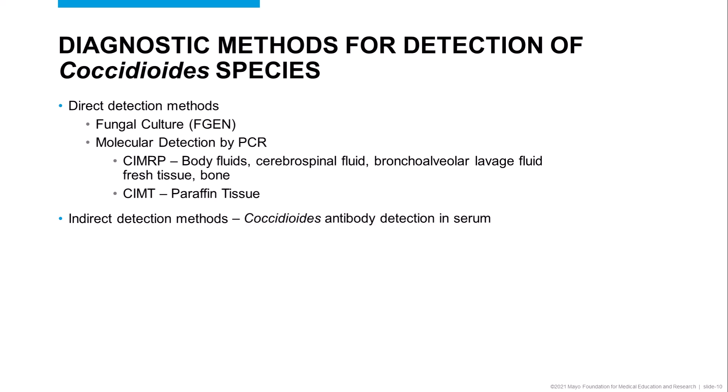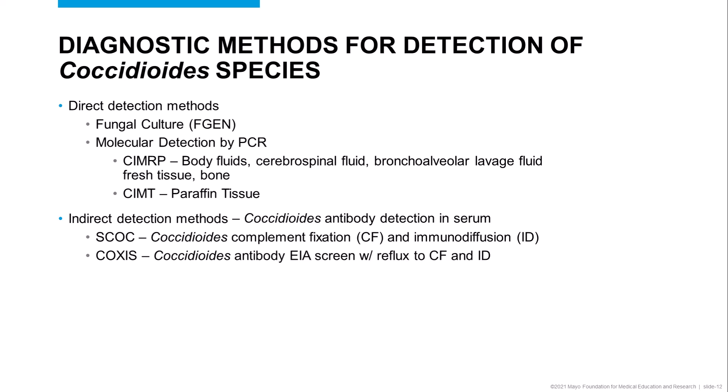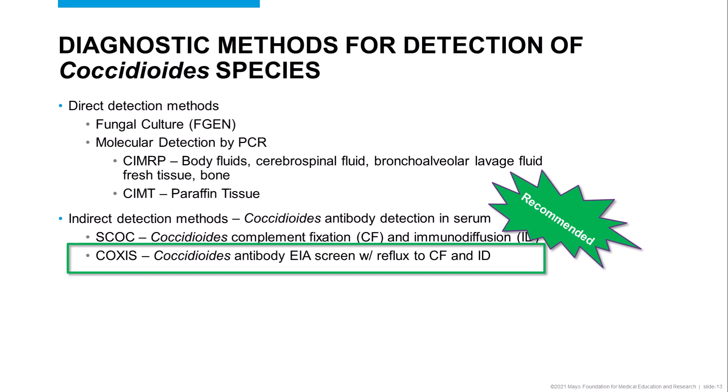Also, with both of these methods, they often require invasive specimen collection procedures, which may be contraindicated in some patients. As a result, indirect detection methods — which primarily includes detection of antibodies against coccidioides — is also frequently ordered in suspected cases or for pre-immunosuppression screening, particularly in regions where coccidioides is prevalent. We offer a number of serologic tests for coccidioides, including both the classic reference methods of complement fixation and immunodiffusion as a single standalone panel. We also offer a reflexive algorithm, which starts with a highly sensitive screening EIA, followed by CF and ID confirmation of EIA-reactive samples.